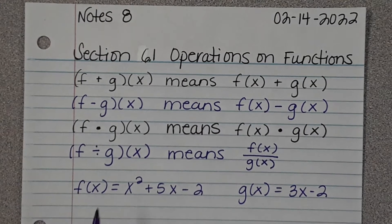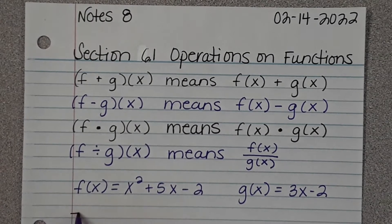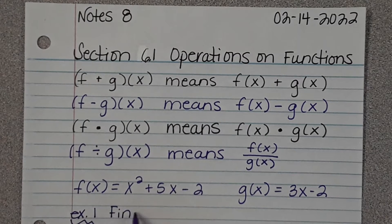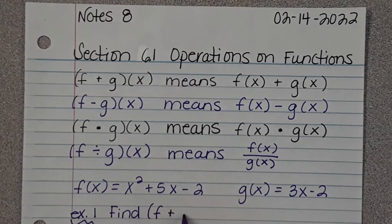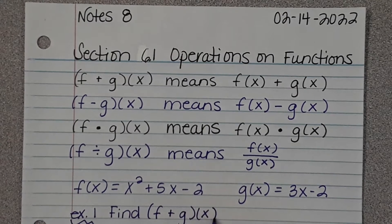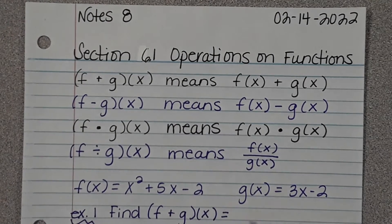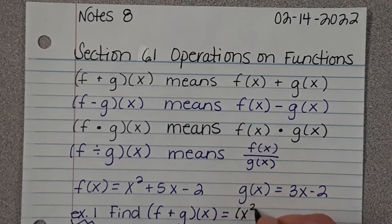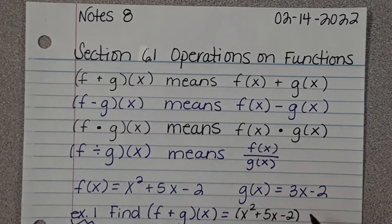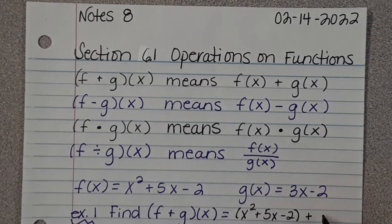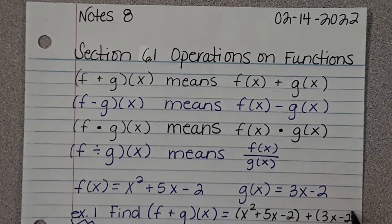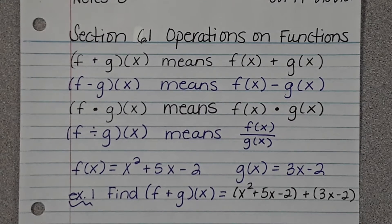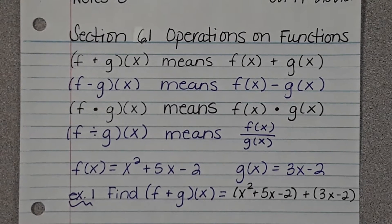So here's our example. Here are two functions. In the very first example, we're going to add them. It's going to say find (f + g)(x). What that means is we're going to take f, x² + 5x - 2, and we're going to add g of x, which is 3x - 2. Put them in the parentheses. It will really help when you go to subtract and multiply.